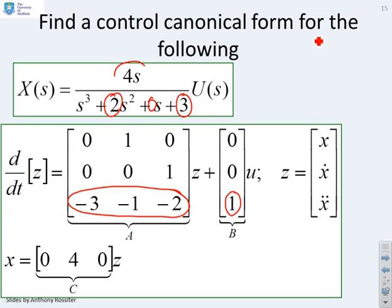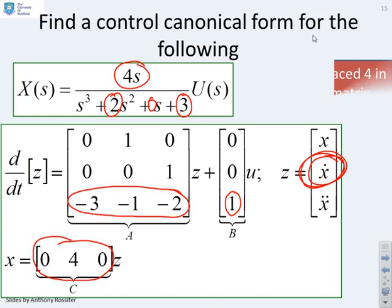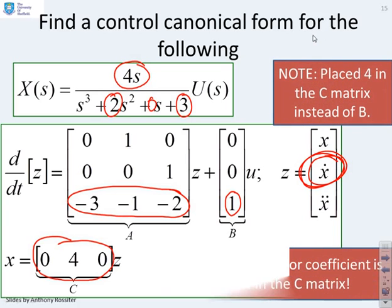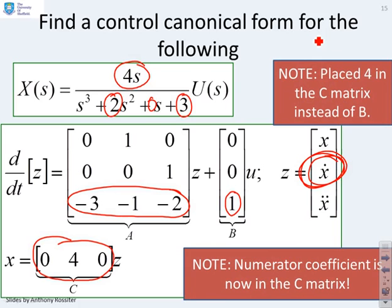So that if I was to find my si minus a inverse b, then I'd have all the terms that I want. Now, I want a numerator for s. s corresponds to x dot, which means I want the second column. And you'll see over here, I've taken the second column in my definition of c, and I've also put a 4 in because there was a 4 in the numerator of my transfer function. So the numerator coefficient is now in the c matrix. So that's quite an important point. We've used the a and b matrix just to capture the denominator, and we've used the c matrix to capture the numerator. So there's a nice partitioning there, or divide.